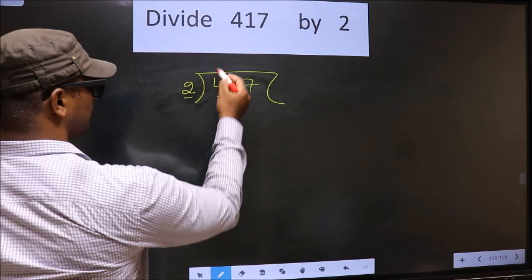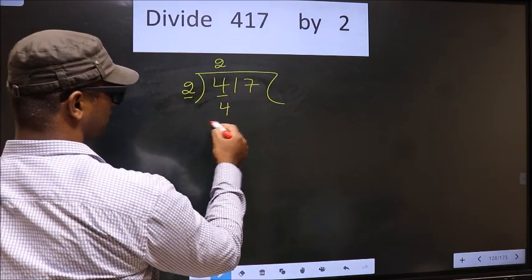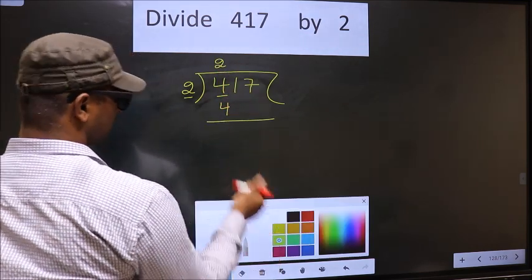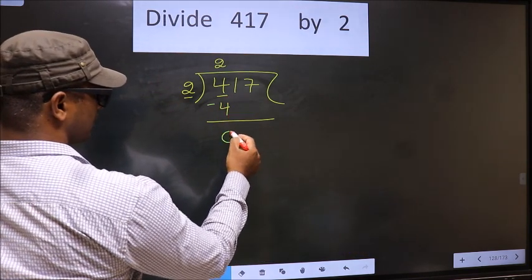When do we get 4 in 2 table? 2 times 2 is 4. Now you subtract 4 minus 4, 0.